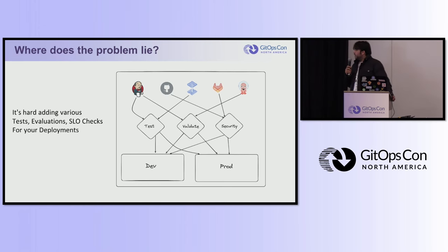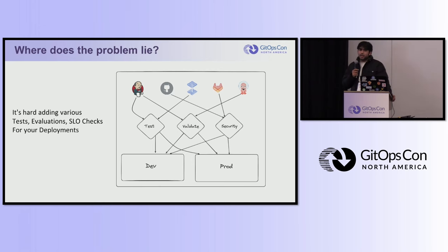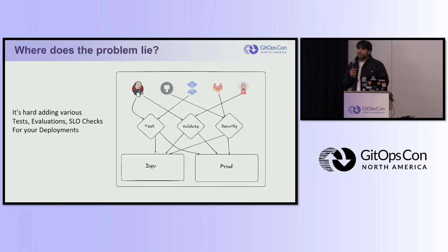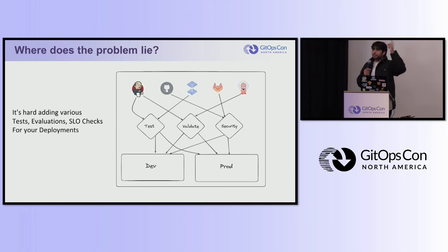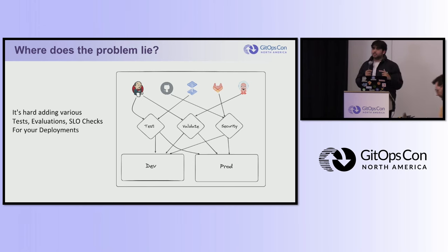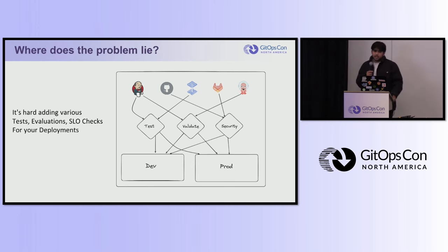Let's say you have a dev environment and a prod environment. You might have different tests or be checking for different metrics. Before a deployment is made to a dev environment, you might be checking for a certain metric like available CPUs, fetching that from Prometheus using GitHub Actions. All this can be done, but it's pretty messy.